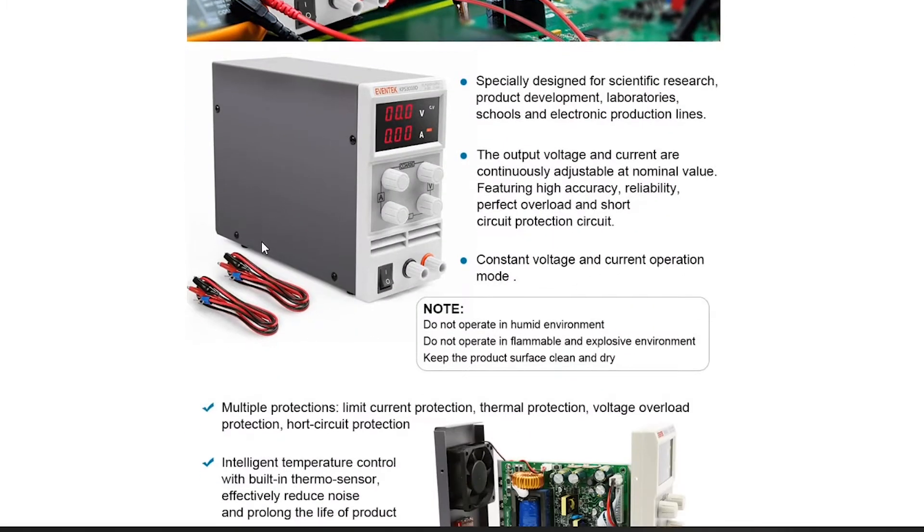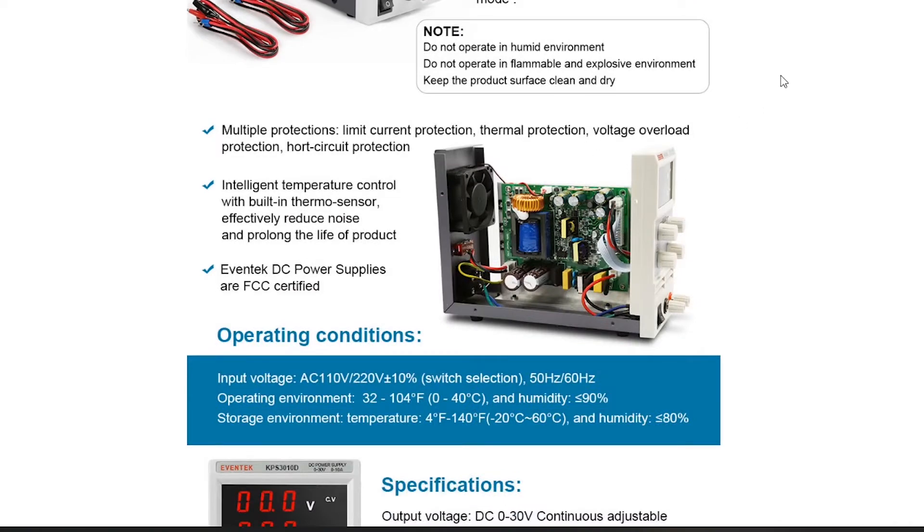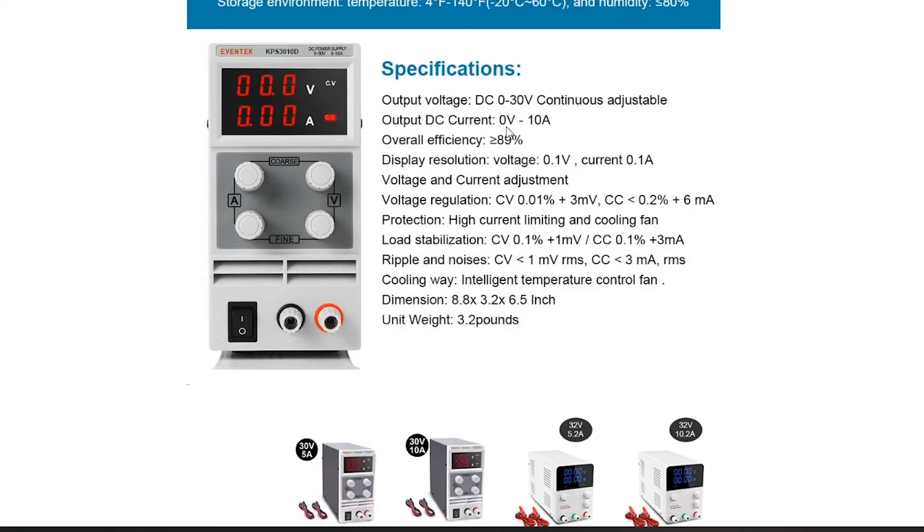I haven't opened it yet, but I am hopeful that it comes with the banana clips because I don't own any yet. I like the fact that they showed the inside of it. Here's the specification - 0 to 30 volts. Apparently it can do an accuracy of 0.1 volts and 0.01 amps, which is nice.